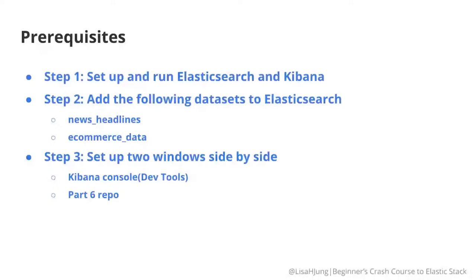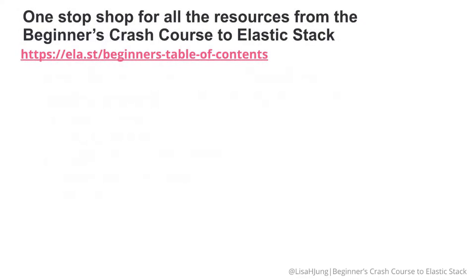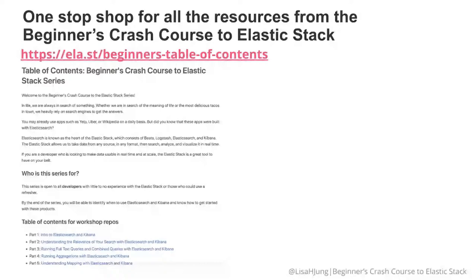Here are the prerequisites for part six. If you've completed parts one through five, you've already completed steps one and two, so feel free to skip this part. For those joining for the first time, you need to complete the prerequisites to keep up. First, set up and run Elasticsearch and Kibana. Then add two data sets — news headlines and e-commerce data — to Elasticsearch. Then have two windows open side by side: one with the Kibana console and one with the part six repo.